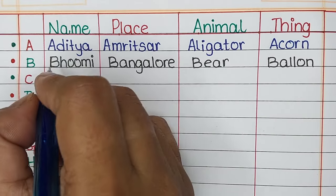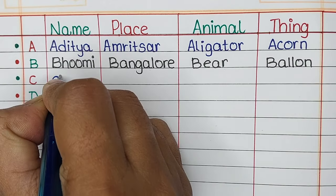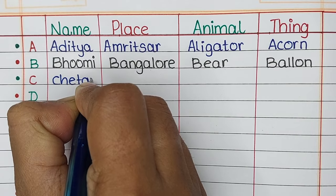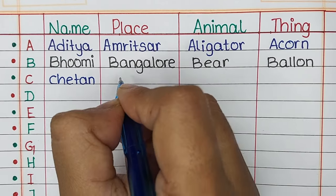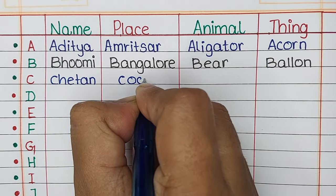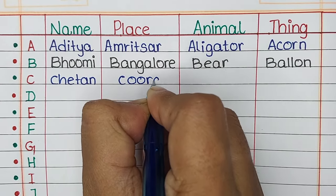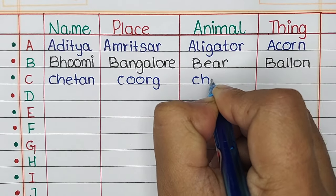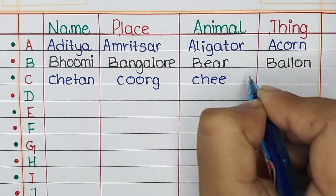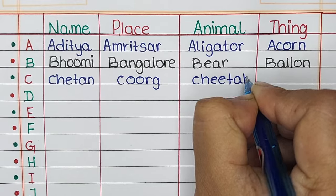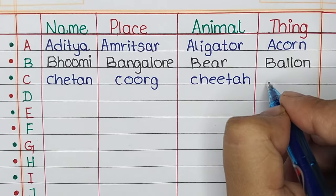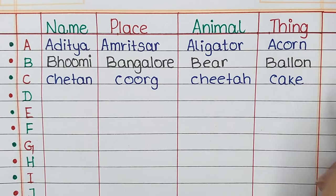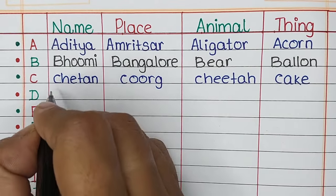Next is letter C. The name that starts with alphabet C is Chetan, the place is Chandigarh, the animal is Cheetah, and the thing is Cake.